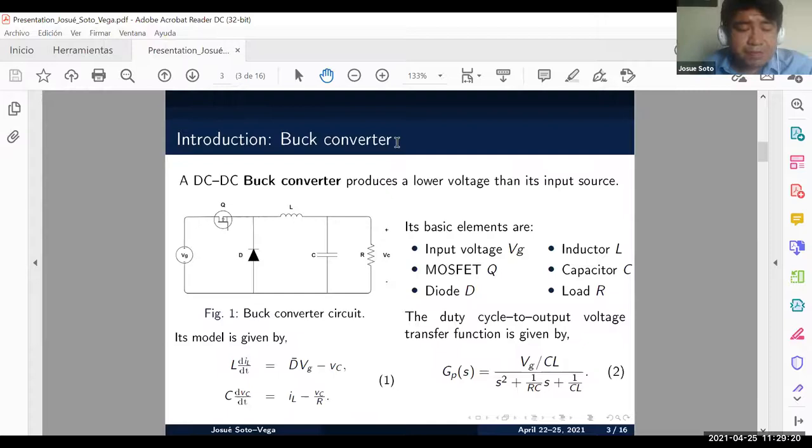The buck converter is one of the three basic DC-DC converters. This converter produces a lower voltage than its input source and the circuit diagram of the basic configuration is shown in figure one. The basic elements are input voltage, MOSFET, diode, inductor, capacitor, and load.